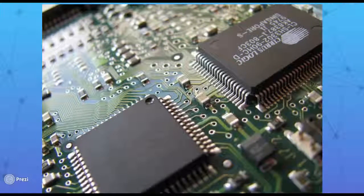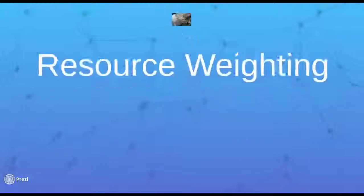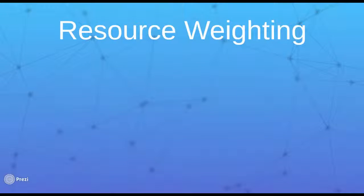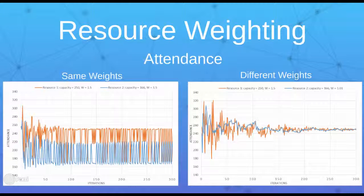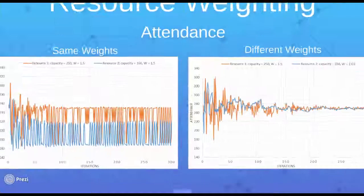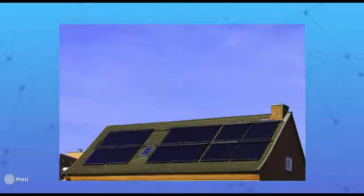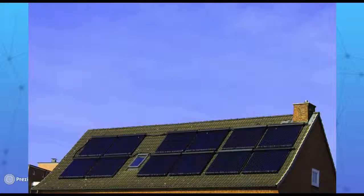We also investigated the effect of adding weights, so that agents might prioritize resources. In this example, we see that by adding differing weights, we minimize the effect of low resource capacity on attendance behavior. Smart buildings might use weights to prioritize the use of renewable energy to light up their rooms.